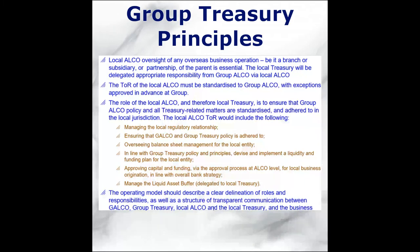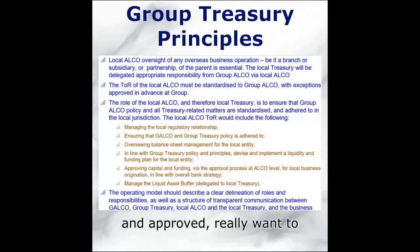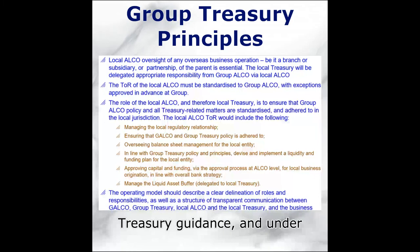What's important is to get the group treasury policy and standardization in place, with exceptions to be approved in advance. So where there is any moving away from the group treasury policy, that's noted and approved in advance. We really want to make sure that the local function is managing its balance sheet appropriately under group treasury guidance and under local ALCO guidance as well.